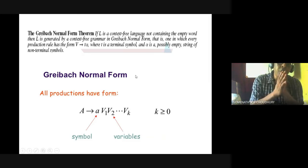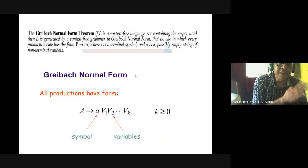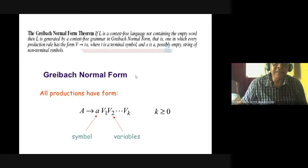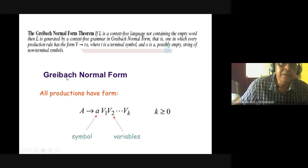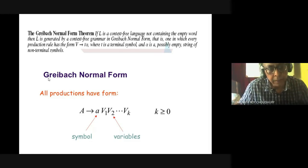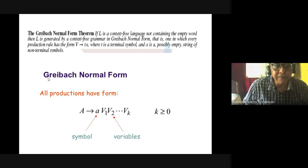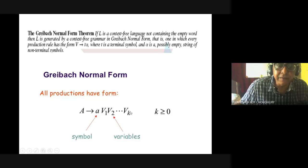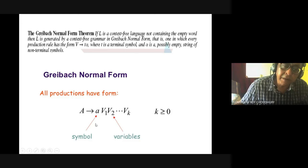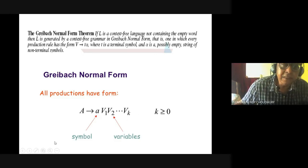Another normal form is the Greibach Normal Form. There are two formal normal forms: one is Chomsky Normal Form, another is Greibach Normal Form. Remember, Greibach is a lady — a great computer scientist. There are a few ladies in computer science; the ADA programming language was also developed by a lady. Greibach Normal Form says: left-hand side is one variable, right-hand side starts with one terminal followed by any number of variables. This is different from Chomsky — it is another useful normal form.